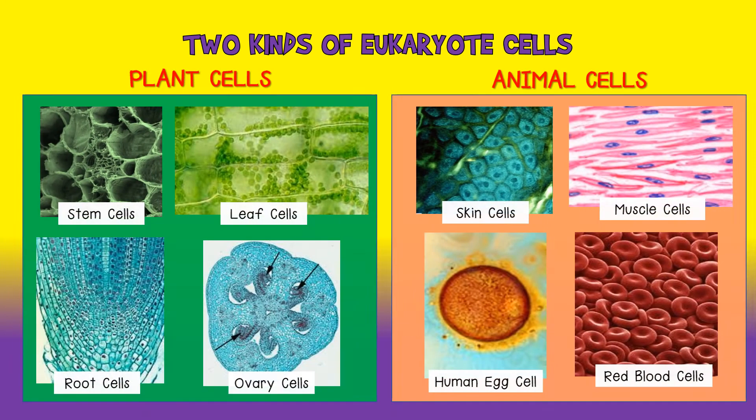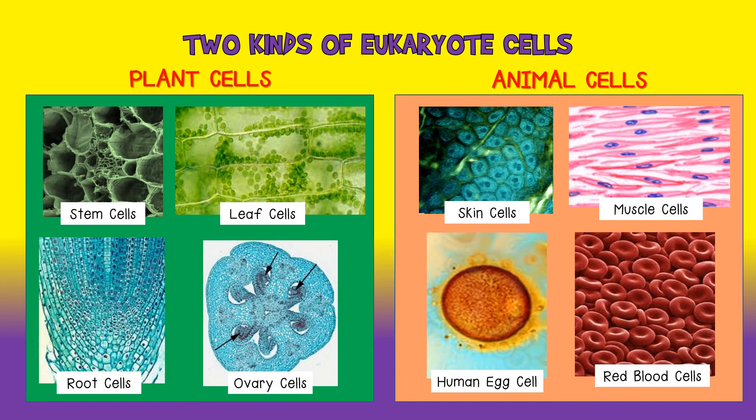Prokaryote cells do not have a nucleus, while eukaryote cells do have a nucleus. There are two main types of eukaryote cells: plant cells and animal cells. There are other types of eukaryote cells too, which we will not discuss here. These pictures show some examples of plant and animal cells as seen under a microscope.